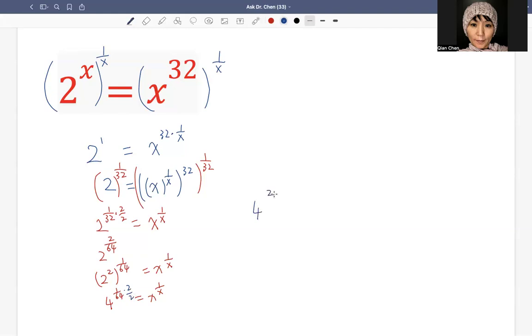So then we have 4 raised by 2 over 64 times 2, that's 128, equals to x raised by 1 over x.